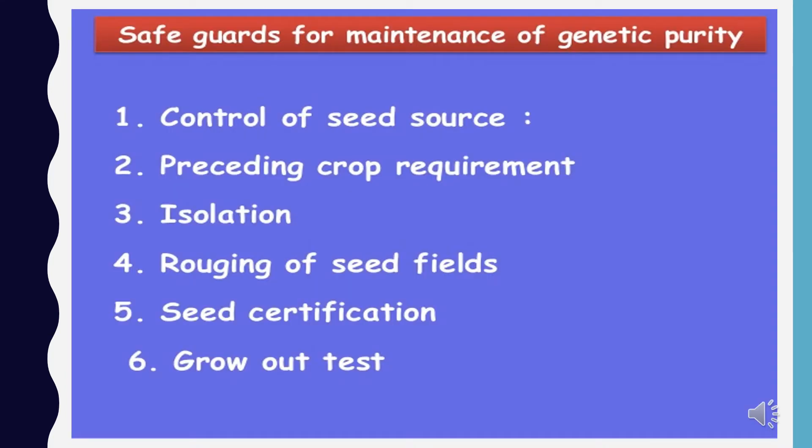Safeguards necessary for the maintenance of genetic purity include: first, control of seed source; second, preceding crop requirement; third, isolation; fourth, roguing of seed fields; fifth, seed certification; and sixth, grow-out test, which is done for confirming the genetic purity of the seeds.